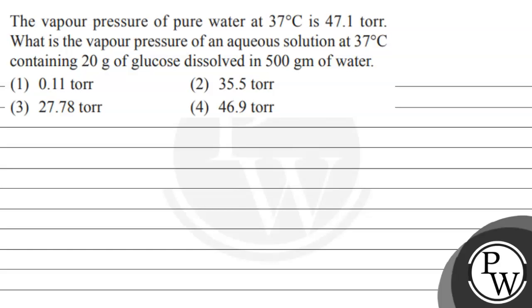Hello, let's read this question. The vapor pressure of pure water at 37 degree Celsius is 47.1 torr. What is the vapor pressure of an aqueous solution at 37 degree Celsius containing 20 gram of glucose dissolved in 500 gram of water?